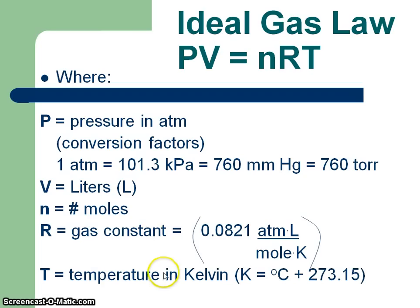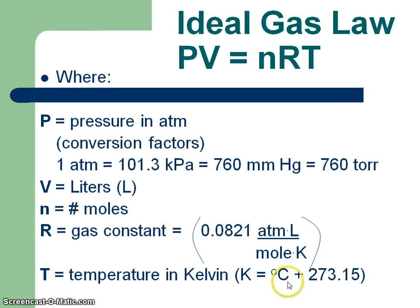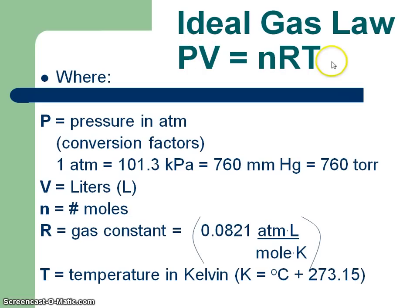T — temperature has to be in Kelvin. We have to have an absolute temperature. We can't have any negatives, and we cannot have a zero. Since we have never reached zero Kelvin, we will not have a zero in our equation. So those are the definitions of everything in Perv Nert.